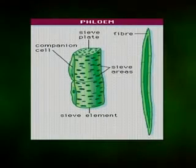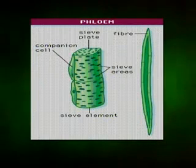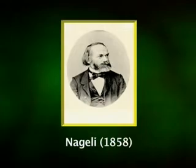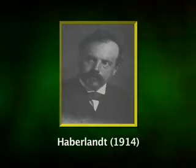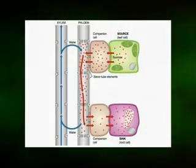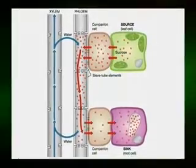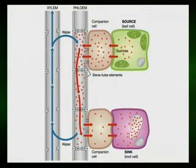Phloem is a complex conducting tissue of vascular plants. The term phloem was coined by Negali in 1858 from the Greek word for bark. The term leptome was used for phloem by Heberland in 1914. The phloem is a distinctive, important and highly complex tissue solely responsible for the transportation of food material from the source — i.e., leaves and storage organs — to the sink, i.e., regions of need.